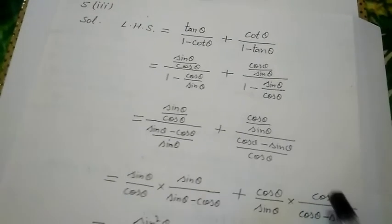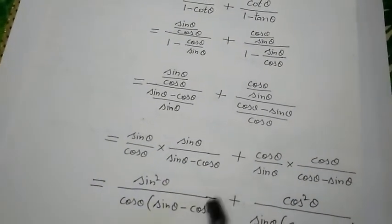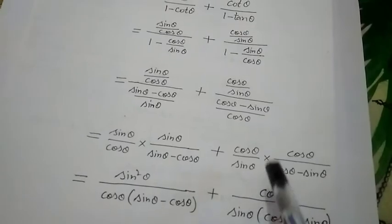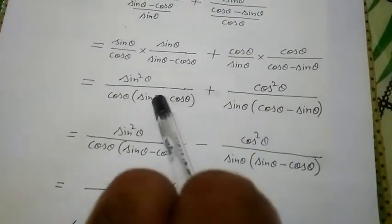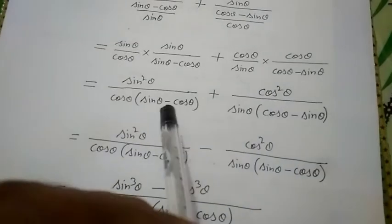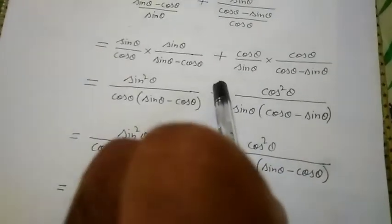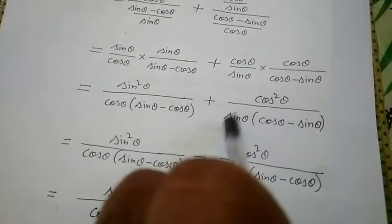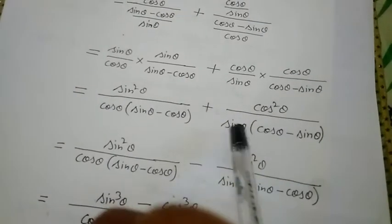Changing division to multiplication: the first term's denominator inverts, bringing cos θ to numerator over (cos θ − sin θ); similarly sin θ comes to numerator over the bracket for the second term. Multiplying: sin² θ appears in the numerator of the first term with bracket (cos θ − sin θ), and cos² θ in the numerator of the second. Now notice: the first bracket is (sin θ − cos θ) and the second is (cos θ − sin θ) — they differ only in sign. Taking minus common from the second bracket changes its sign to match the first.